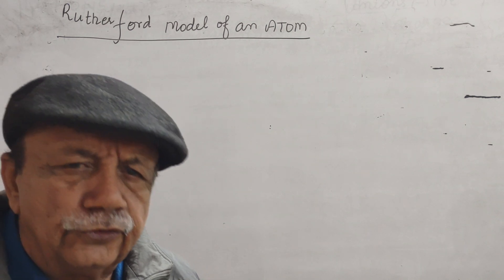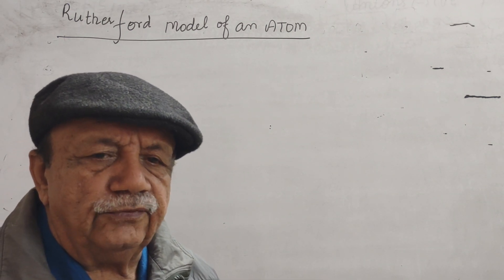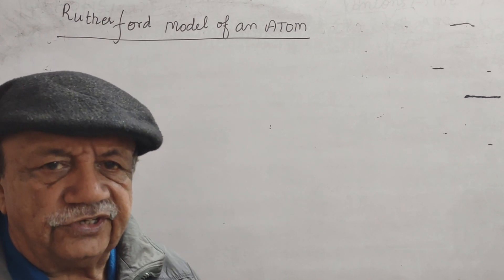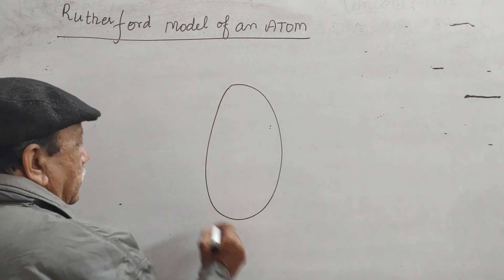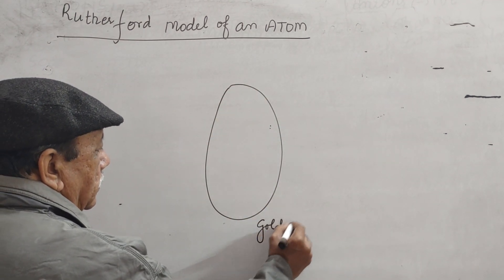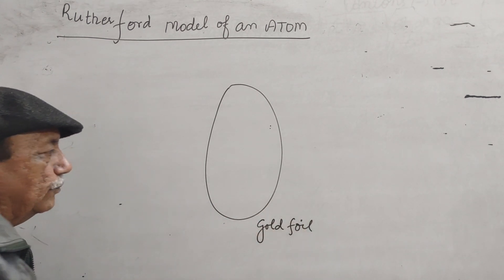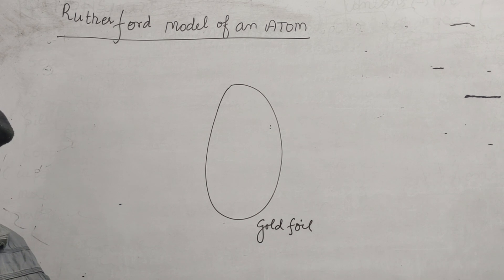He took very, very thin sheet of gold foil. As you know, gold is malleable in nature, means we can make its very thin sheet. And gold is almost non-reactive in nature.